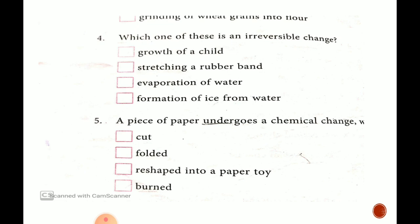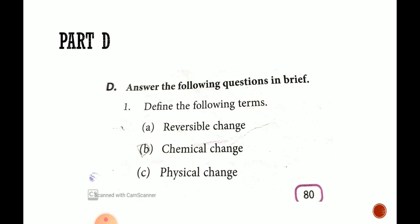Then a piece of paper undergoes a chemical change when? Chemical change kab hua paper ke saath? Jab hum ne usko cut kar diya? Nahi. Paper hi tha. Fold kar diya? Toh bhi paper hi tha. Reshaped into a paper toy. Paper toy bana diya? Toh bhi paper hi hai. Khol dayenge toh vaapis paper ban jayegi. Then burned. Yes. Burn karenge toh ye kuch or ban jayegi. Ash ban jayegi. And it will become a chemical change. So this is the answer that is burned.